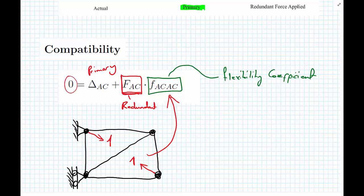Just a quick little note on the notation for the flexibility coefficient. I'm going to write this a little bit larger: f_AC,AC. The first subscript AC is telling us where the deflection is measured.